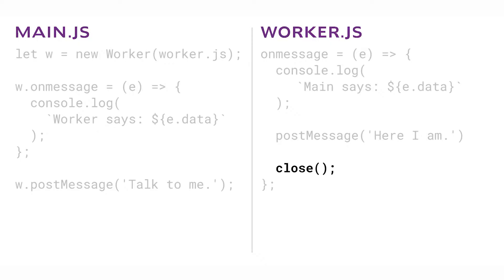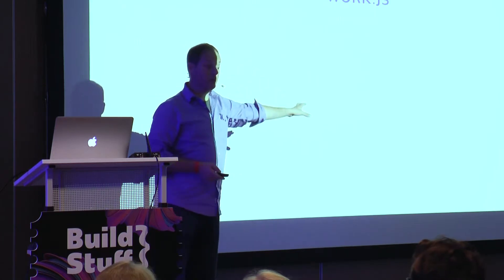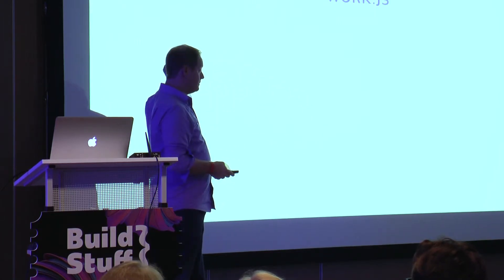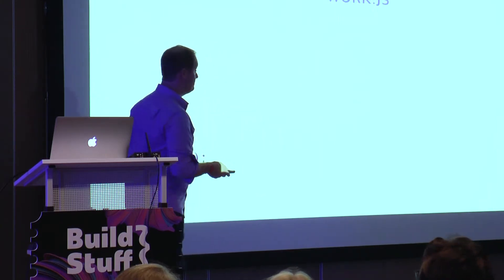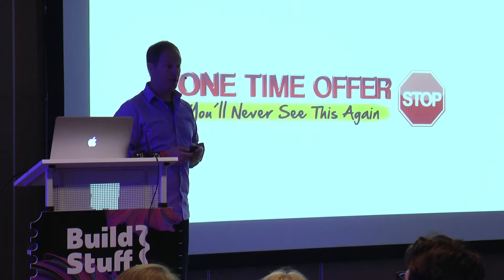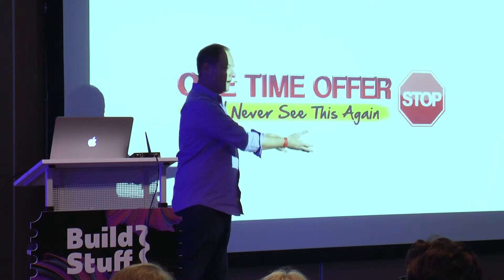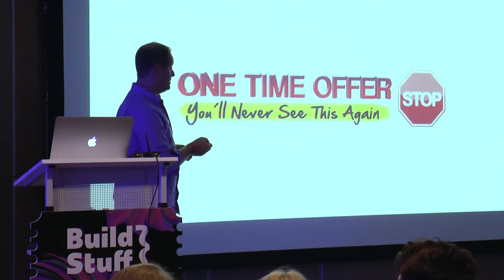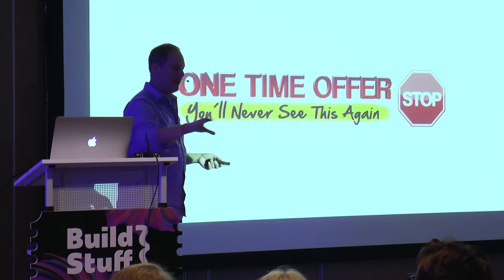The thing about terminate() is that it's immediate — the worker is in the middle of doing something, doesn't matter, stop everything, shut down. And once it's gone, it's gone. You can spin up another worker, but if you had internal variables you were tracking inside the original worker, once it's closed you're not going to reopen it. So you don't want to terminate on a whim — you need to manage these things.